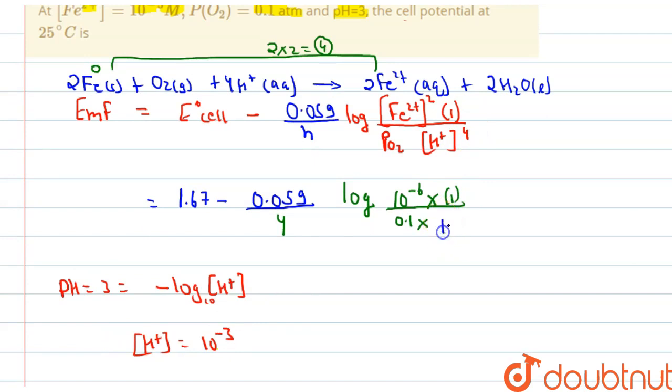Now let's put the value of this concentration of H+ 10 to the power minus 3 here. This is to the power 4. So this is 10 to the power minus 12. Now if we solve this, we will get our answer is 1.57 volt. So the cell potential is equal to 1.57 volt. This is the answer.